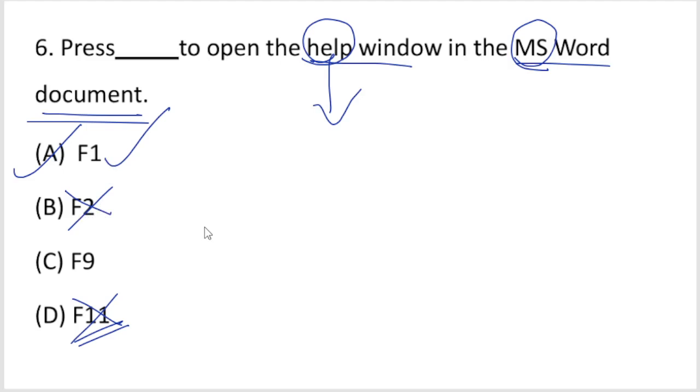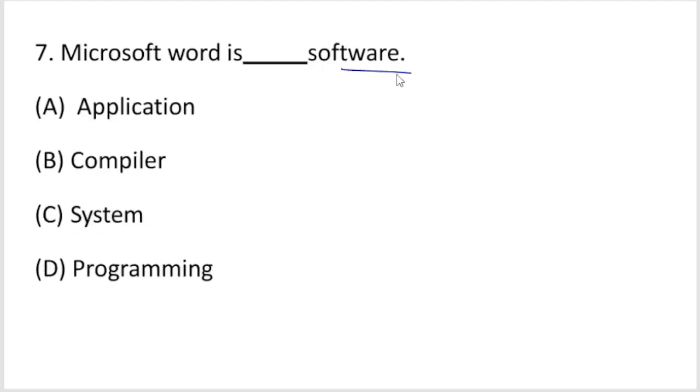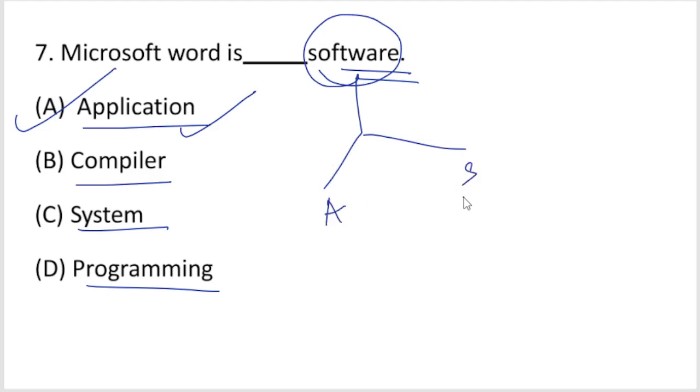Question 7: Microsoft Word is a what type of software - application, compiler, system, or programming language? Programming language is the language of the computer. Software has two types: application software and system software.